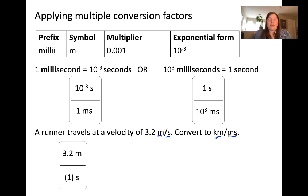I rewrote the given information here as a fraction. The velocity given is 3.2 meters per second. Per second implies that the runner will travel 3.2 meters in one second. That's why I put the one in parentheses because it's implied. Then to convert from meters to kilometers first, the length unit, we're going to put meters in the denominator so that they'll cancel with the meters in the numerator of the first domino or the given information.